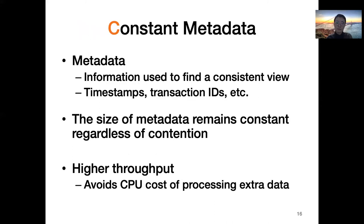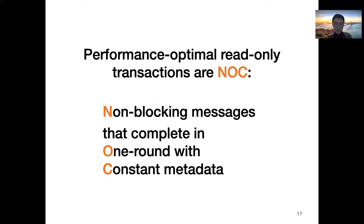The C property captures the minimum possible amount of metadata — constant metadata. It requires that the size of the metadata per read remains constant, meaning it cannot increase with the size of the system, the size of transactions, or the number of concurrent operations. Read-only transactions with constant metadata have higher throughput because they avoid the CPU overhead of processing extra data. The NOC properties capture the least coordination overhead for read-only transactions, bringing them as close as possible to simple reads: non-blocking messages that complete in one round with constant metadata. Thus, read-only transactions are performance-optimal if they have all three of these algorithmic properties.